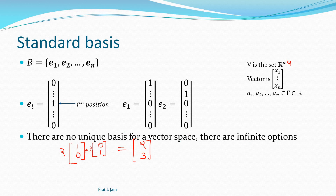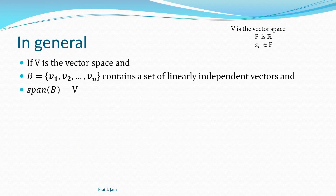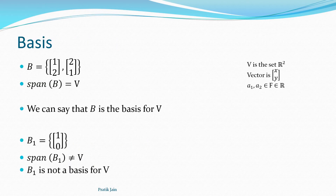There is no unique basis for a vector space — there are infinite options. As I showed, you can have the standard basis or you can also have the set containing (1,2) and (2,1). You can have any basis for a vector space; there are infinite options and it depends on the application as to which basis is appropriate.